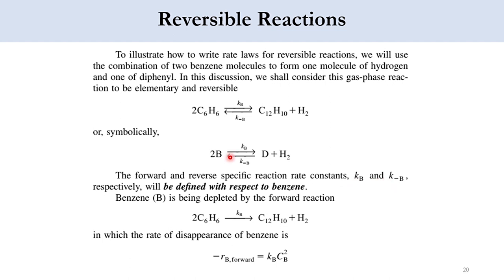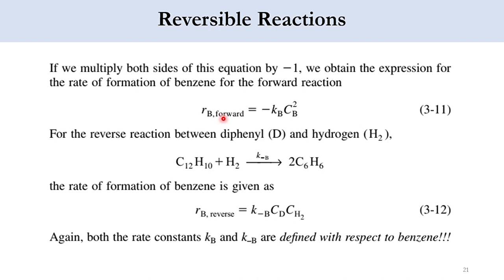Dividing this into two segments — one for the forward and one for the reverse. For the forward reaction, benzene is being depleted: 2 moles of C₆H₆ produce C₁₂H₁₀ and H₂. Accordingly, the rate of disappearance of benzene is: -R_B(forward) = K_B · C_B². Multiplying both sides by -1: R_B(forward) = -K_B · C_B². This is the forward rate for this reaction.